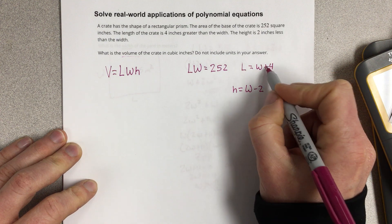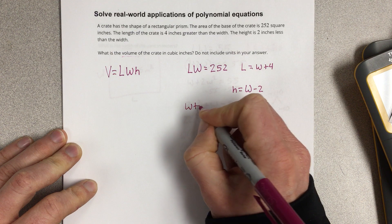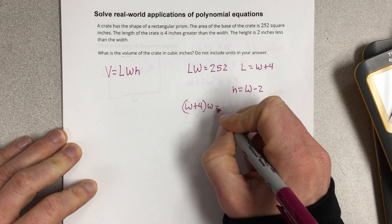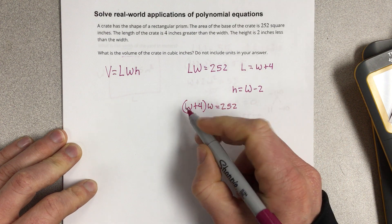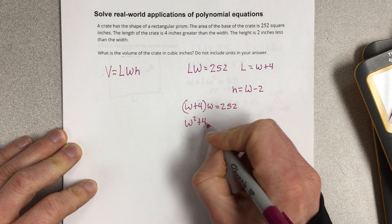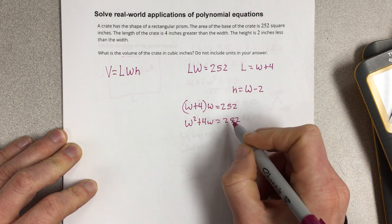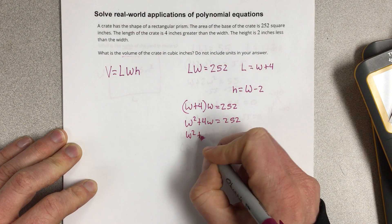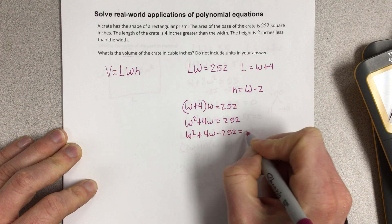So we take W plus 4 and we plug it in. So it'd be W times W plus 4 equals 252. Multiply this. That'd be W squared plus 4W equals 252. Let's subtract 252 over to the other side. That's W squared plus 4W minus 252 equals 0.